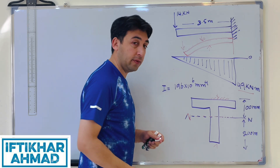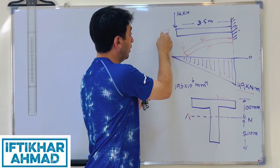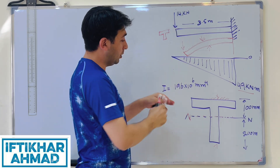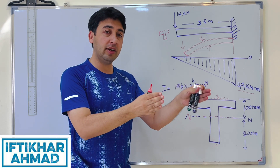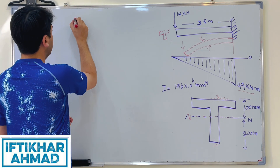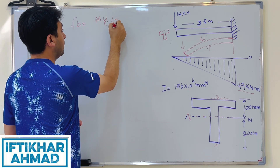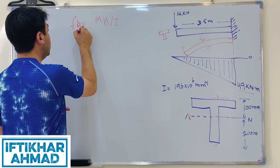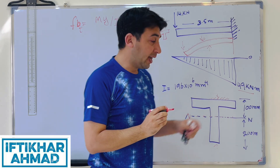The bottom extreme fiber of the T cross section will have bending stresses in compression. We know that bending stresses are given by the formula: f_b = M·y / I. This time we will find the bending stress in tension first.